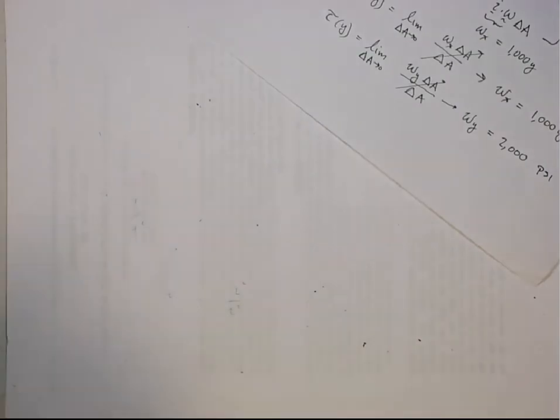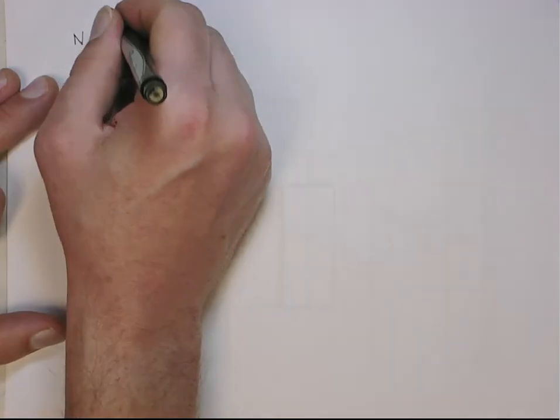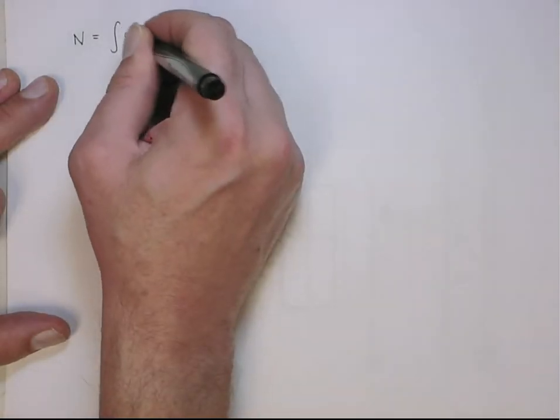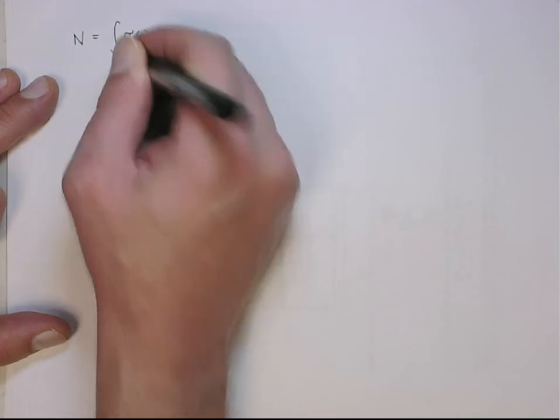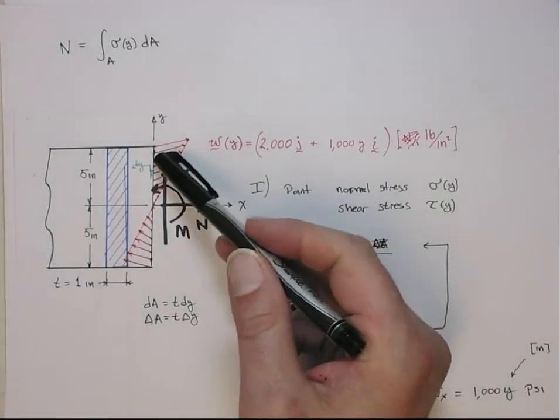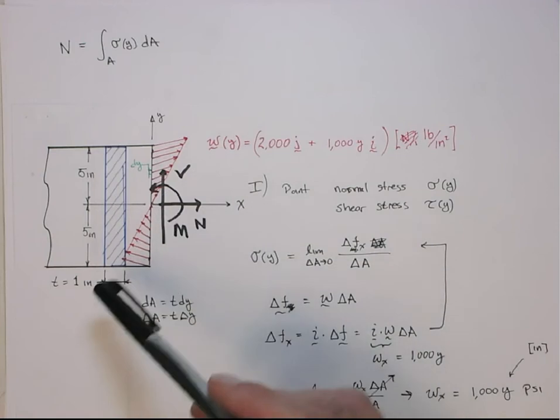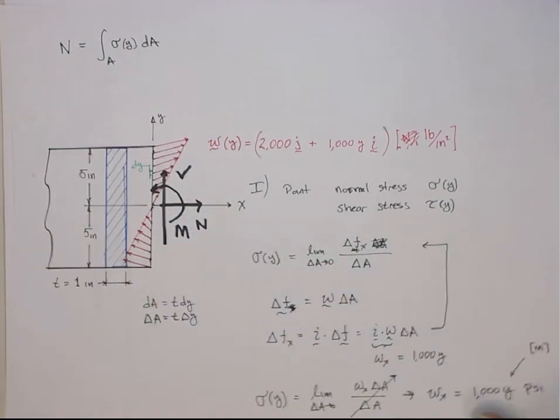So let's get those now. The normal internal reaction force is what you get when you integrate the normal stress, in this case a function of y, over the cross-sectional area. In other words, if you just look at the x component here which has this triangle profile, it's the total area under this curve. We already know that area is zero.